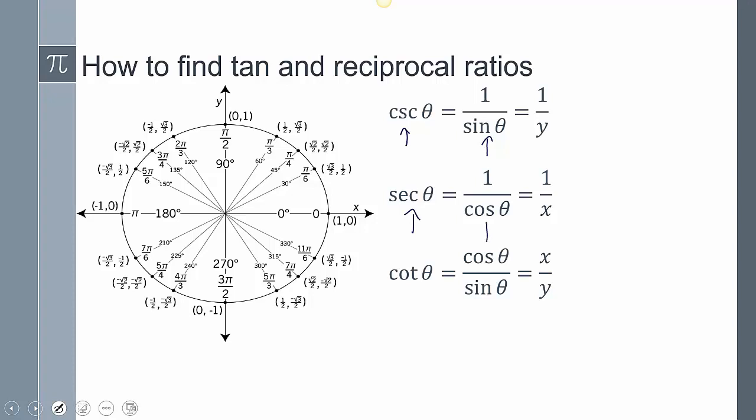Secant, 1 over cosine. Cotangent, because it's the reciprocal, instead of it being tangent sine over cosine, cotangent is cosine over sine. Now notice, that means 1 over y, 1 over x, and x over y.